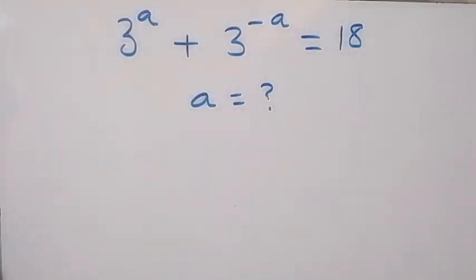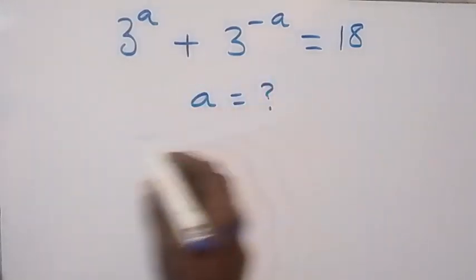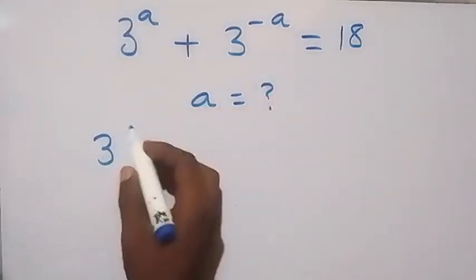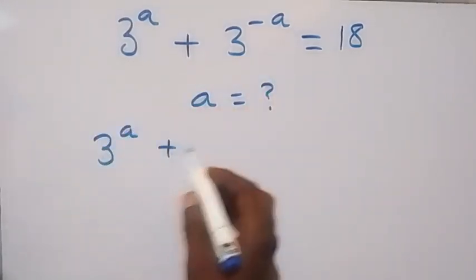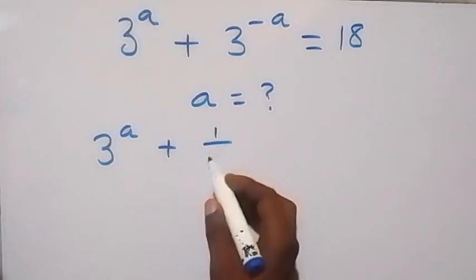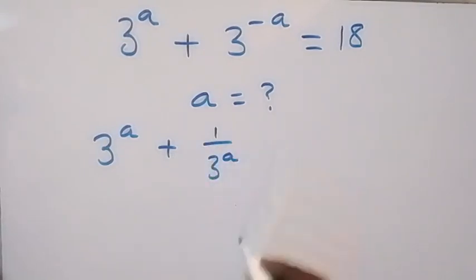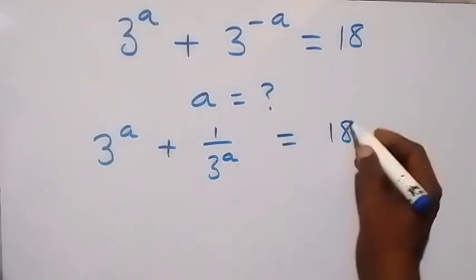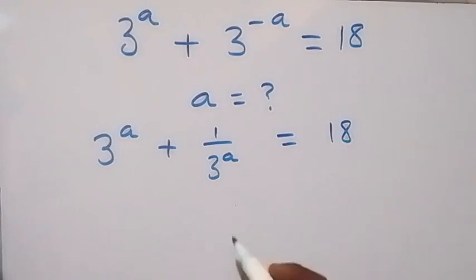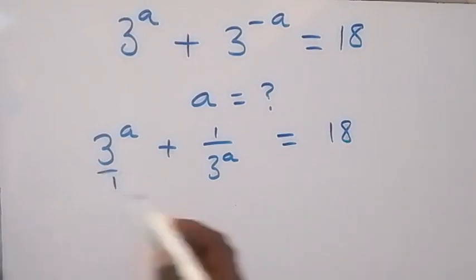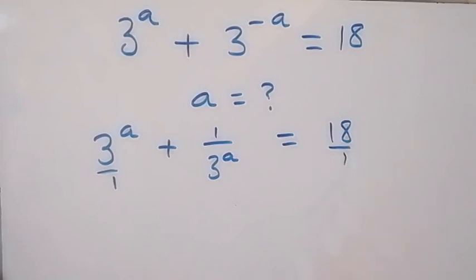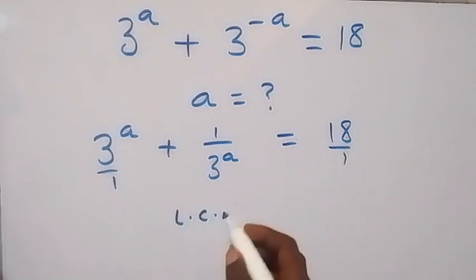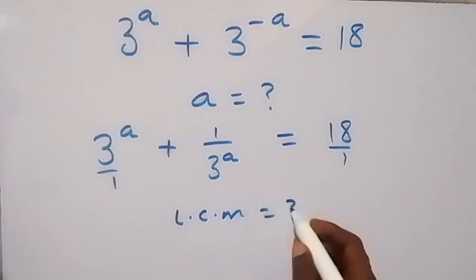To find the value of a, let's write this as 3 raised to power a, then plus 1 over 3 raised to power a, from the law of indices. This is equal to 18, and we also have 1 in the numerator here. The LCM here is 3 raised to power a.